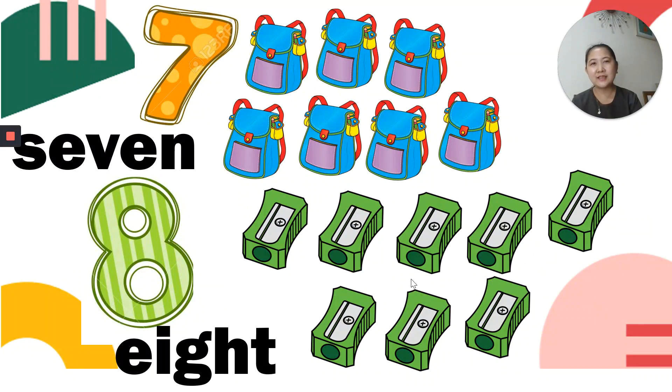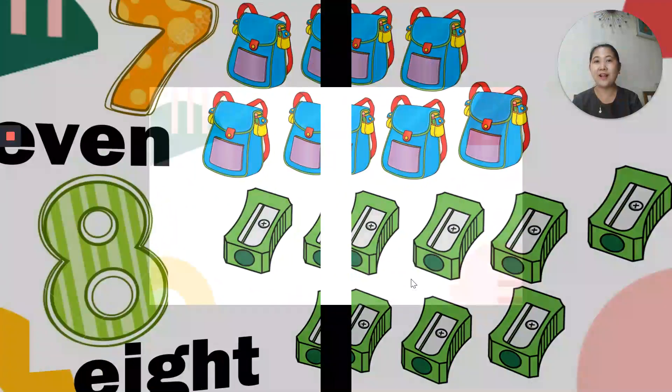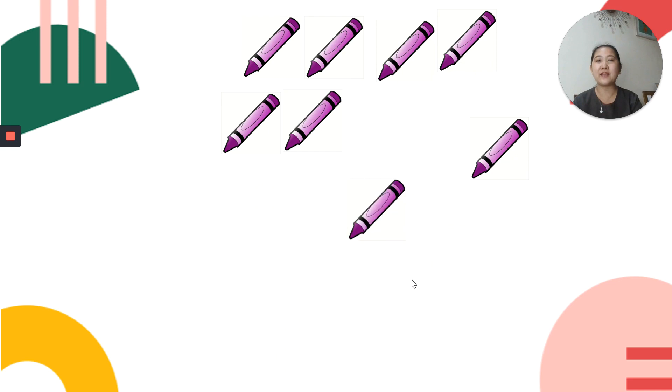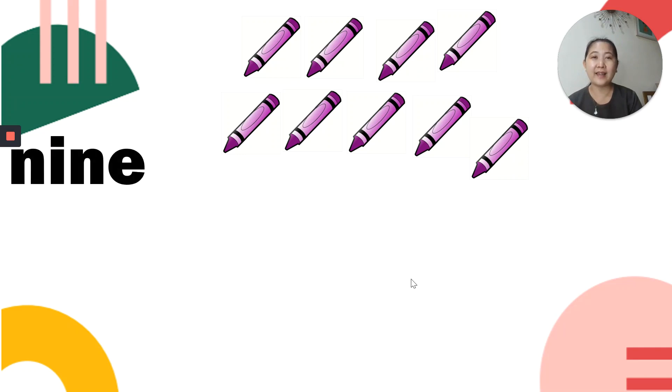What's next after 8? They said it's also a lucky number. Count with me. 1, 2, 3, 4, 5, 6, 7, 8, 9! There are 9 crayons. And we write it as N-I-N-E. That's the spelling for number 9. 9 crayons.